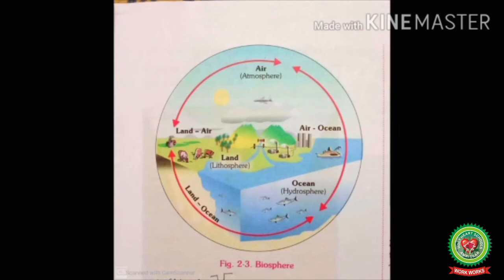The earth has a spherical shape and is divided into three domains: lithosphere, atmosphere, and hydrosphere. The part of the earth covered with land is the lithosphere. The part covered with water is the hydrosphere. The part covered with air is called the atmosphere.